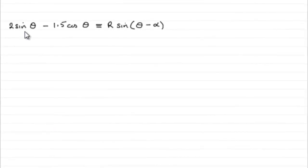Okay, then for this part of the question, we've got to express 2 sine theta minus 1.5 cos theta in the form r sine theta minus alpha.